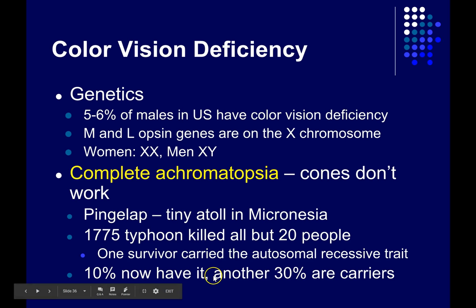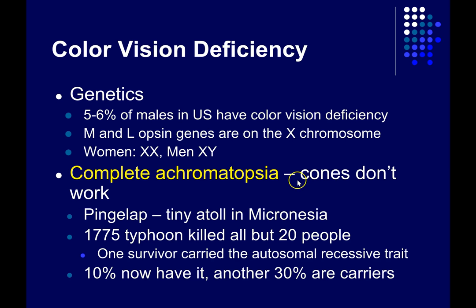And this is much worse than just seeing things in black and white. The cones are concentrated right around the fovea, right around your central vision. If the cones don't work there, you don't have other receptors to perceive that part of the visual field. So they essentially have reverse tunnel vision — they can see in the periphery, but they can't see what they're directly looking at. They're functionally blind because of this.